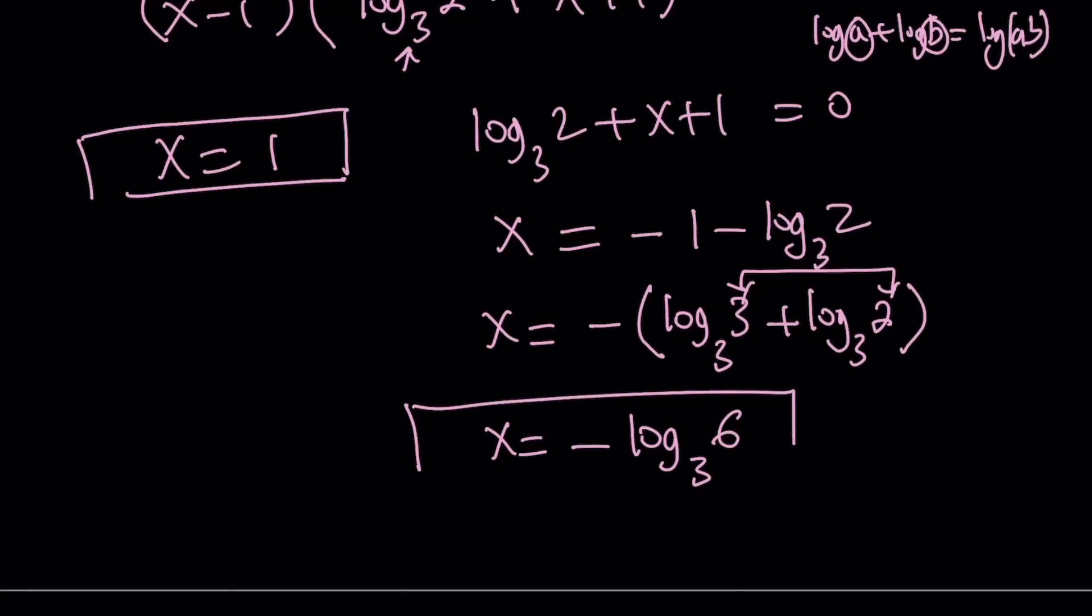Now, we can combine them. So we can write x as log base 3 of 6, because 3 times 2 equals 6. We're supposed to multiply the arguments. Those are the two solutions. We only get two solutions because this turns into a quadratic equation. We're going to have a better idea about why this is a quadratic equation when we do the second solution method.